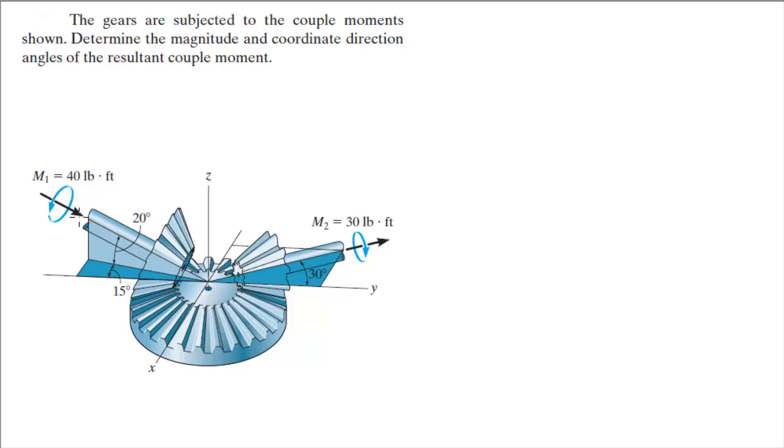So basically all you have to do is break down these two moments into Cartesian vector form. Look at M1 and the direction it has, and you're given a triangle right here. You know that M1 has a Z component going down, an X component going that way, and a Y component going that way. So how do you find these components? With these two angles given right here, this 20 and this 15 degree angle.